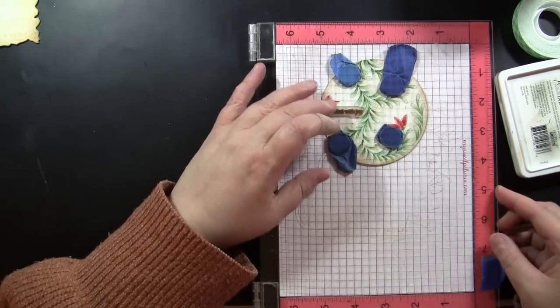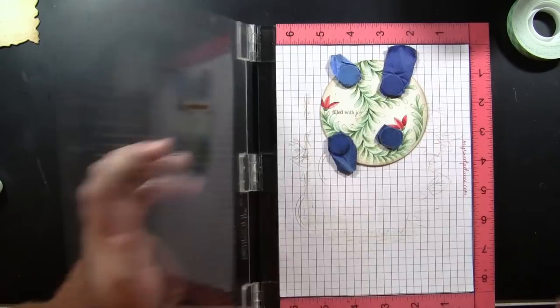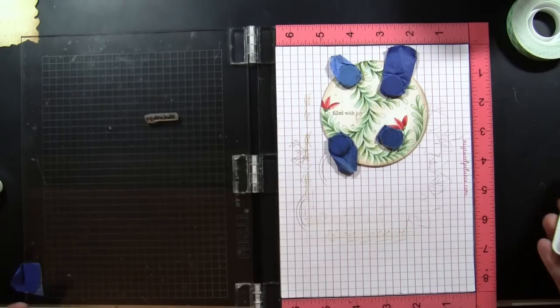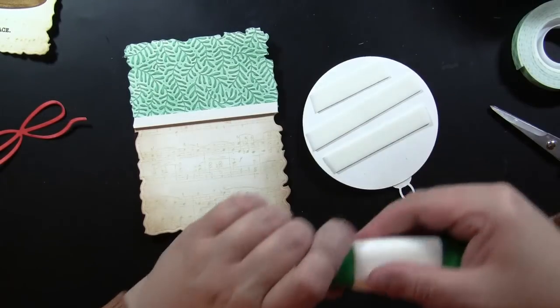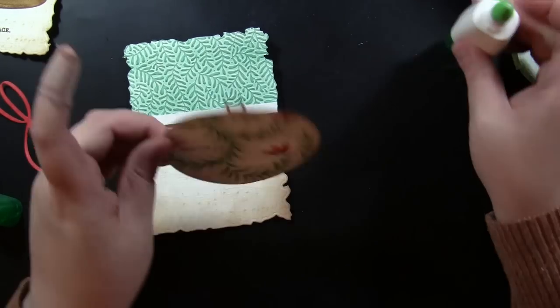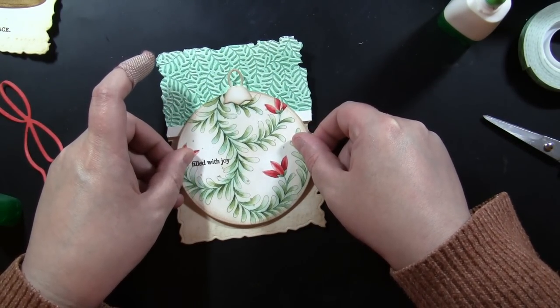Now I'm going to add my sentiment. So I'm just inking that with Ranger Archival Ink in the color of Acorn. I really like this as like a dark sentiment, but not stark black. And I'm ready to add this onto the card. So I put foam tape along the bottom and then just liquid adhesive at the top.